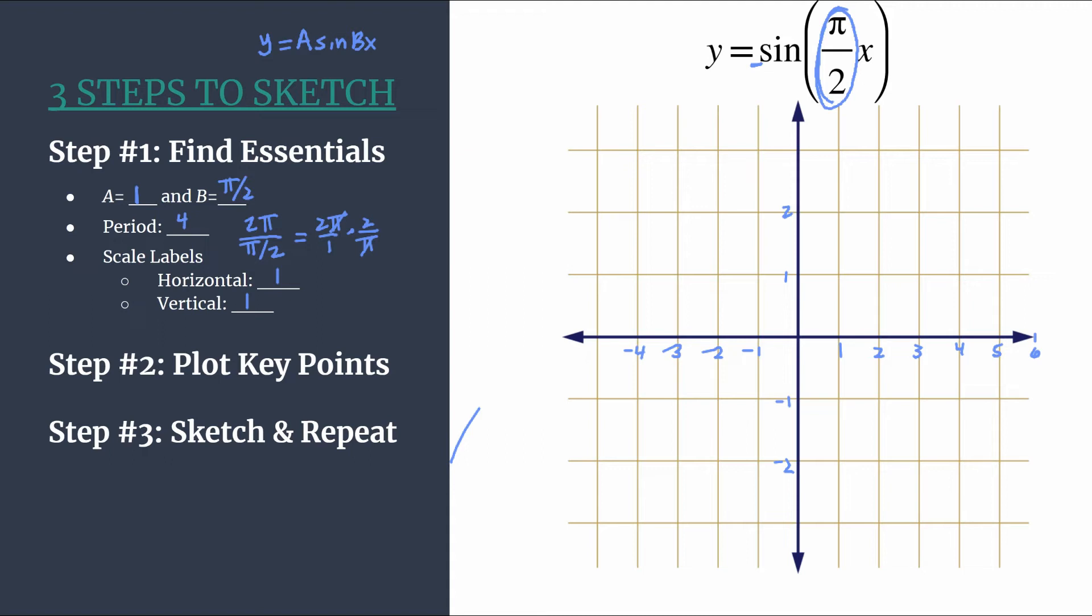We're ready to move on to step two: plot the key points. So for a basic sine graph, an unshifted sine graph, and it's not reflected, we know our pattern should be zero, maximum, zero, minimum, and then we'll repeat.